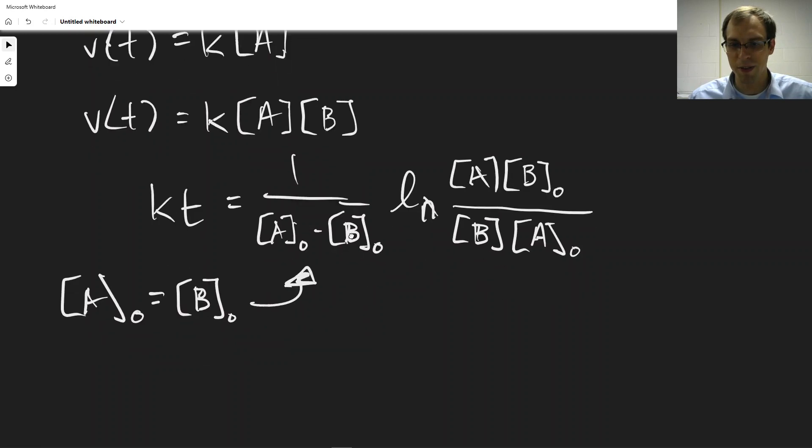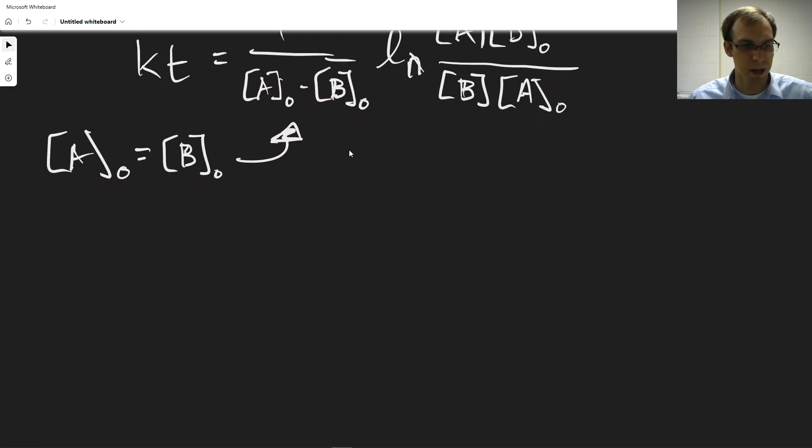So for that specific situation where [A]₀ is equal to [B]₀, we can basically, you can show that, so again, skipping the actual derivation here, but what's the end result?